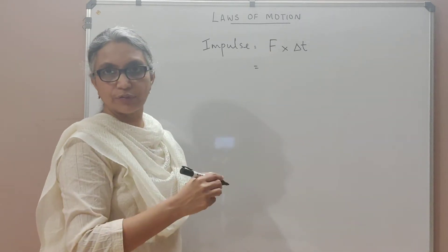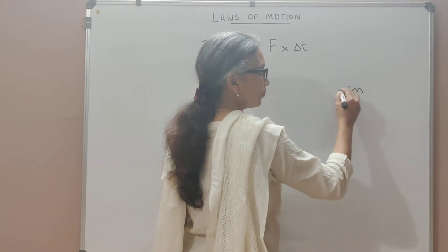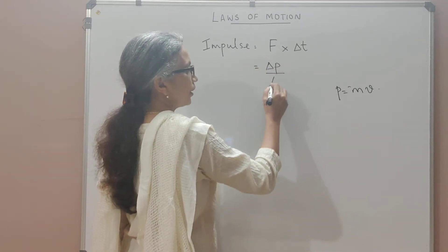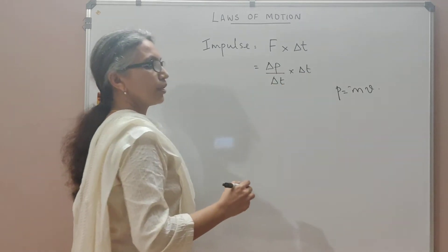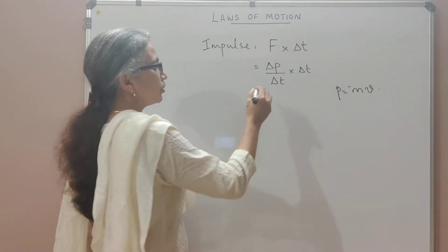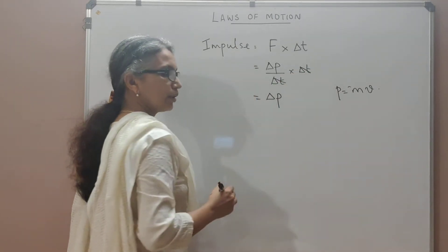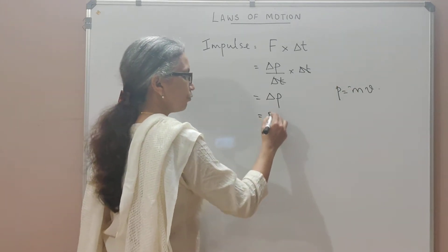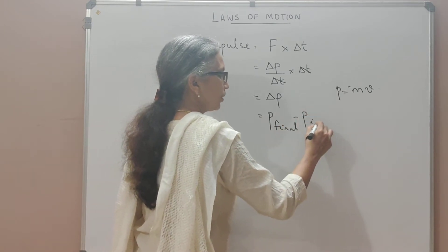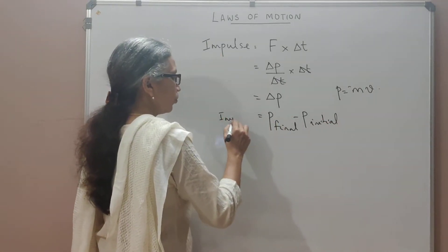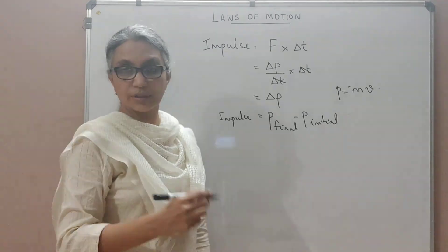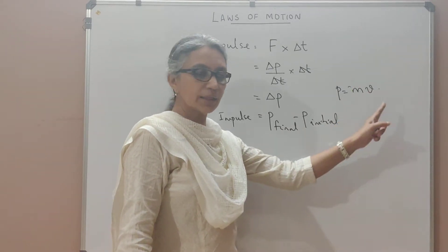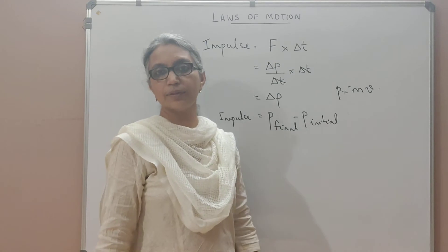From Newton's second law, we know that force is the rate of change of momentum. Momentum p equals mass times velocity, so force equals delta p by delta t. This delta p — the change in momentum — is the impulse. It equals final momentum minus initial momentum. When a net external force acts on a body, it causes acceleration and therefore a change in velocity, giving us that change in momentum.